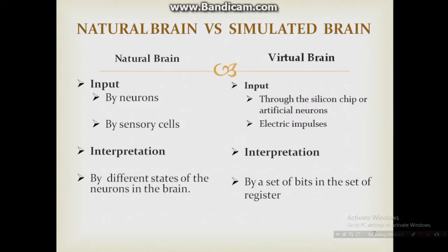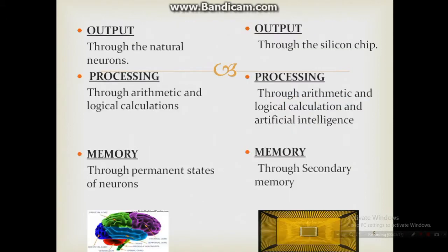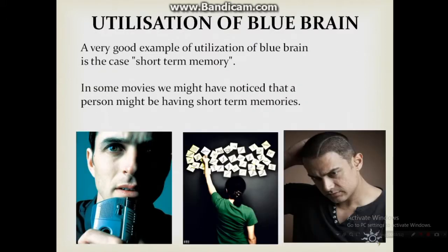Difference between natural brain and virtual brain: In the natural brain, input is received through neurons and sensory cells. In the virtual brain, input comes through silicon chips and electric impulses. For output, the natural brain uses neurons, while the virtual brain uses silicon chips. For memory, the natural brain uses the permanent state of neurons, while the virtual brain uses secondary memory.